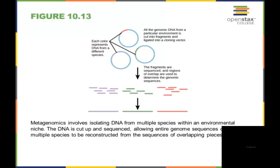Metagenomics involves isolating the DNA from multiple species within an environmental niche. The DNA gets cut up and sequenced, and then it will allow the entire genome sequence of the multiple species to be reconstructed from the sequences of overlapping pieces. Here you start out. Each color represents DNA from a different species. You've got the orange, purple, and the green.